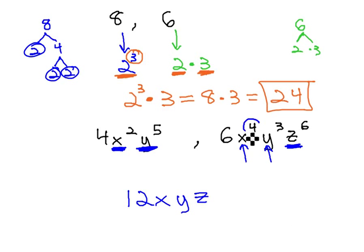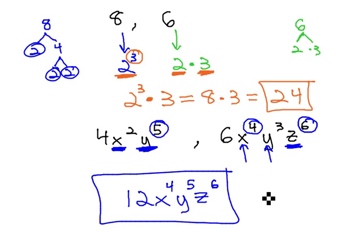With x, the highest exponent we see on there is a 4. With y, the highest exponent on a y is a 5. On z, the highest exponent on z is a 6, and we have our least common multiple of 12x to the 4th y to the 5th z to the 6th.